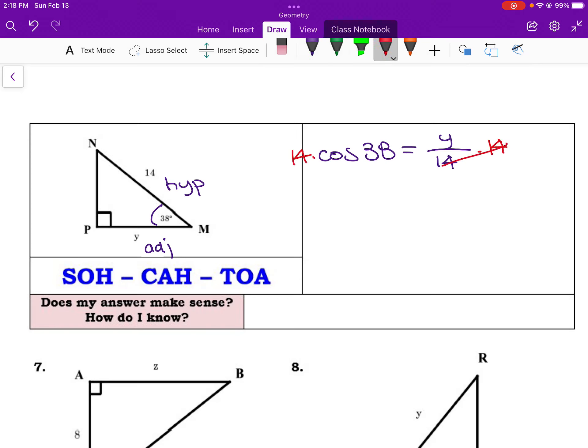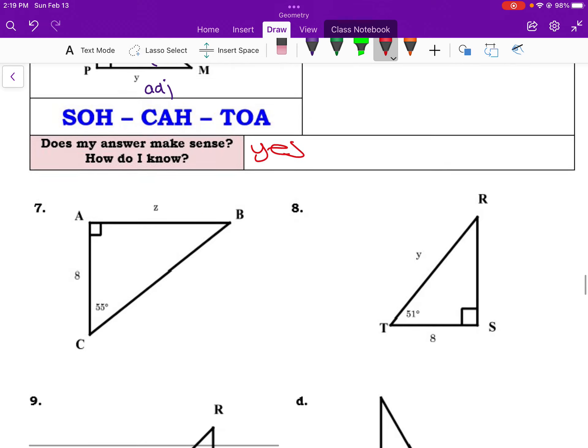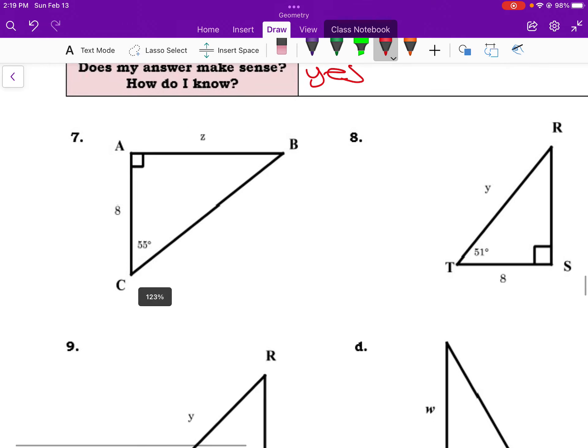To free the y, we need to multiply both sides by 14. These cancel. So cosine of 38 times 14 should give us 11.032. And that is, again, shorter than the hypotenuse. We expect that if that's a leg. So yes, this makes sense too.